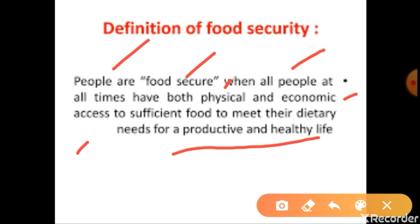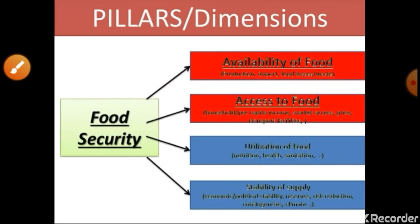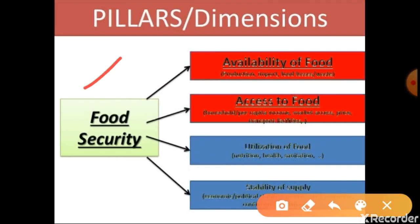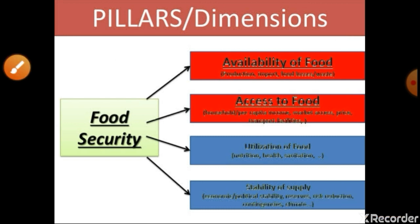People become food secure when all people at all times have a sufficient food supply to meet their dietary needs for a productive and healthy life. The four pillars of food security are: first, availability of food; second, access to food; third, utilization of food; and fourth, stability of food supply.